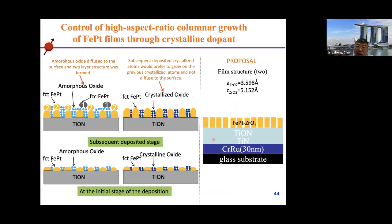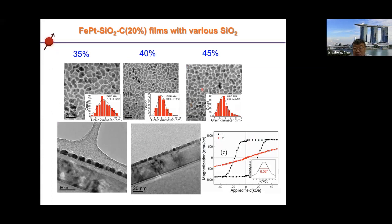Another challenge: when we further reduce grain size, we need to increase the KuV product by increasing thickness. But with increasing thickness, more carbon diffuses out and causes secondary nucleation on top of the existing grains. The secondary nucleation produces FCC-phase FePt — not L10 — which is not good for perpendicular recording media.